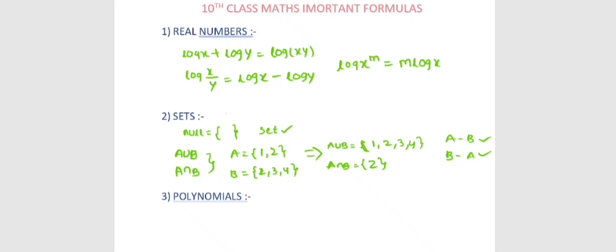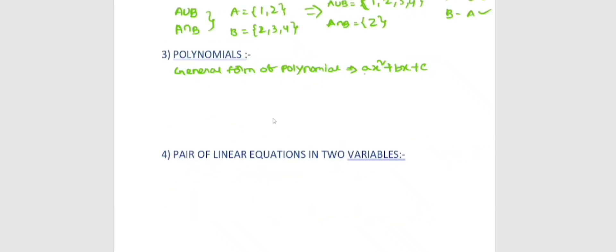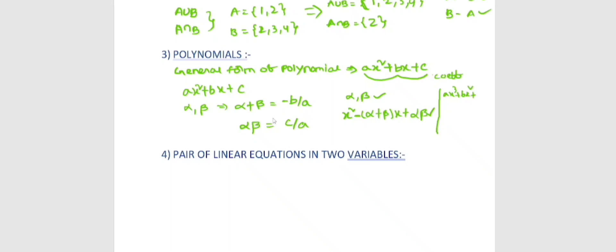Polynomials — the general form of a polynomial. The general form is ax squared plus bx plus c, where a, b, c are the coefficients. For a cubic polynomial, the general form is ax cubed plus bx squared plus cx plus d.